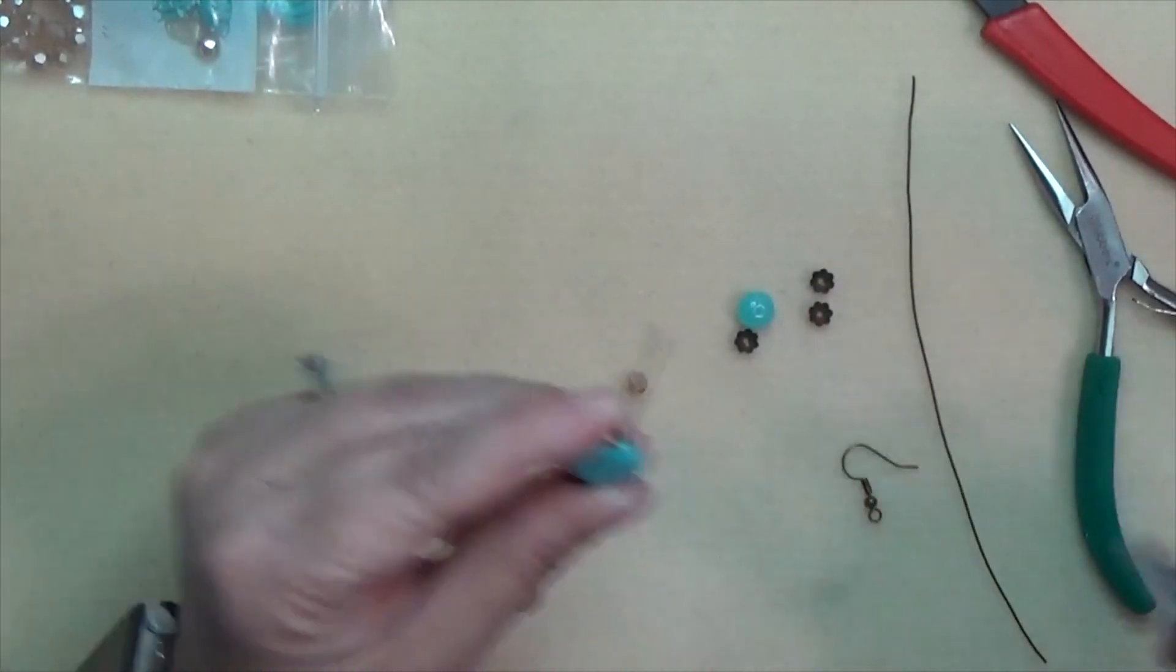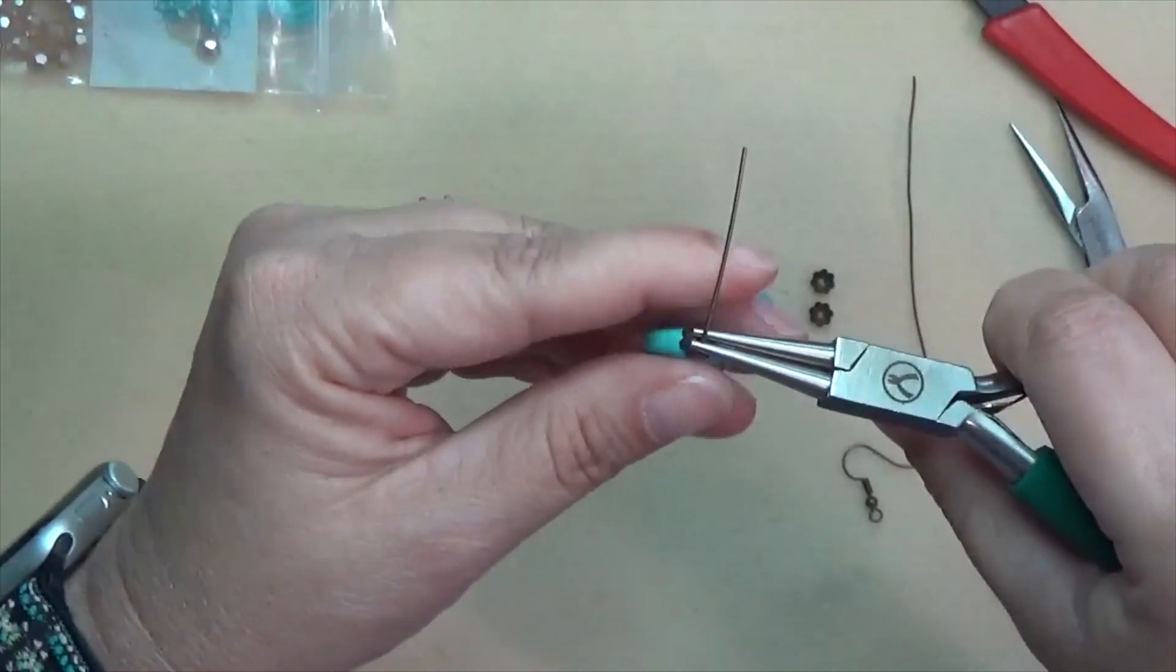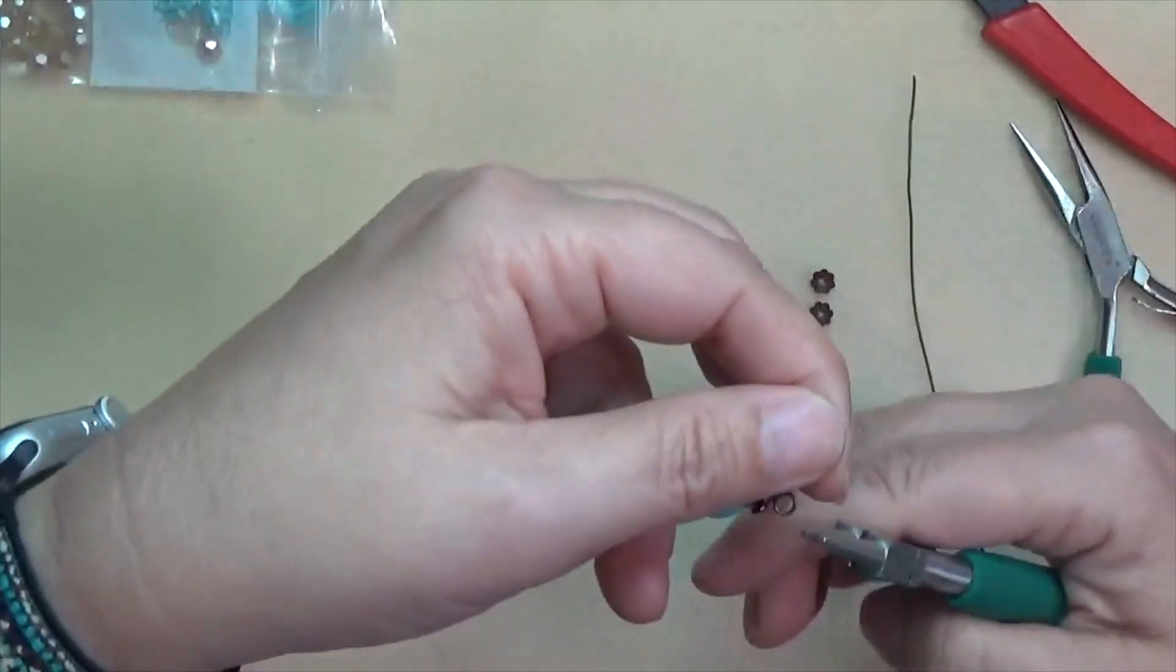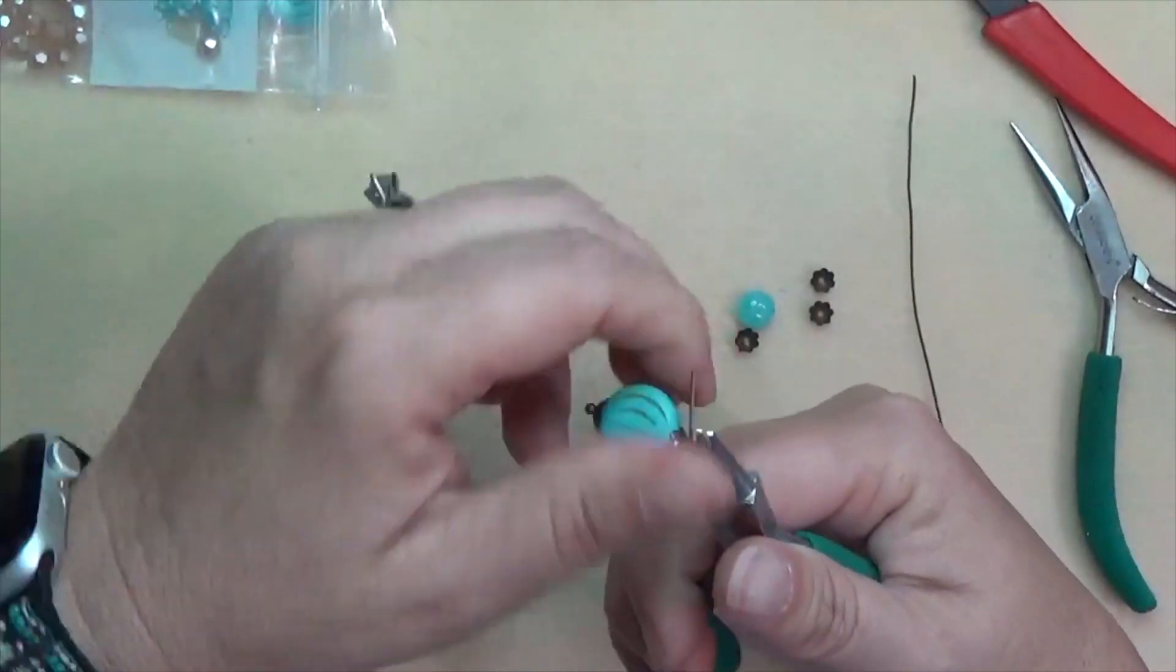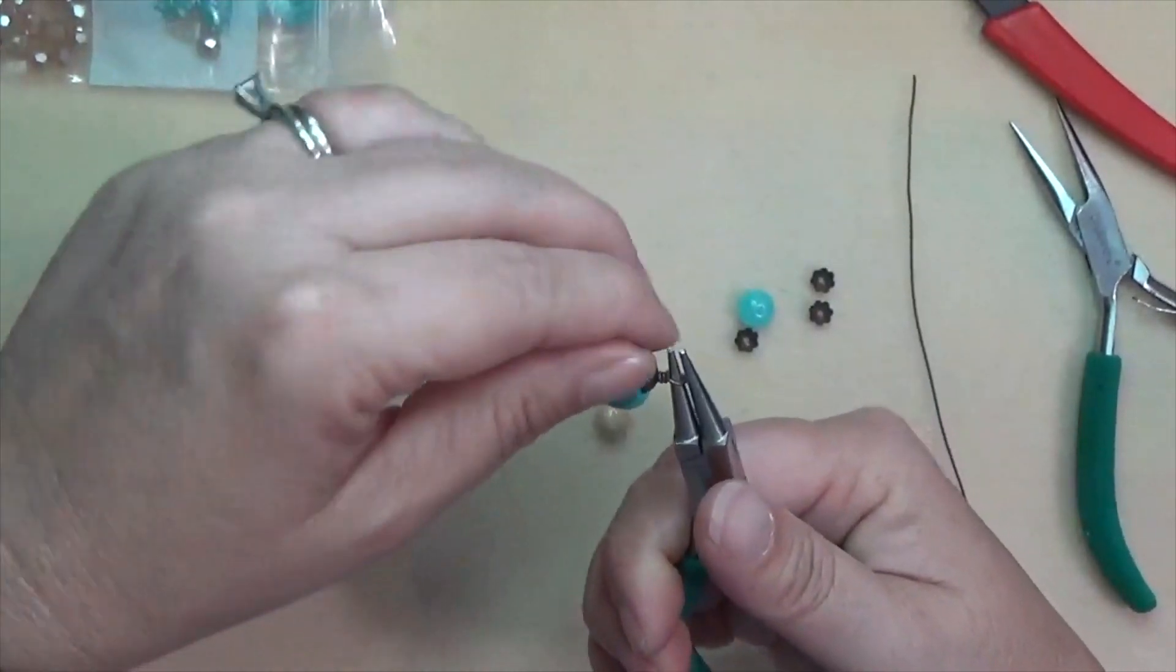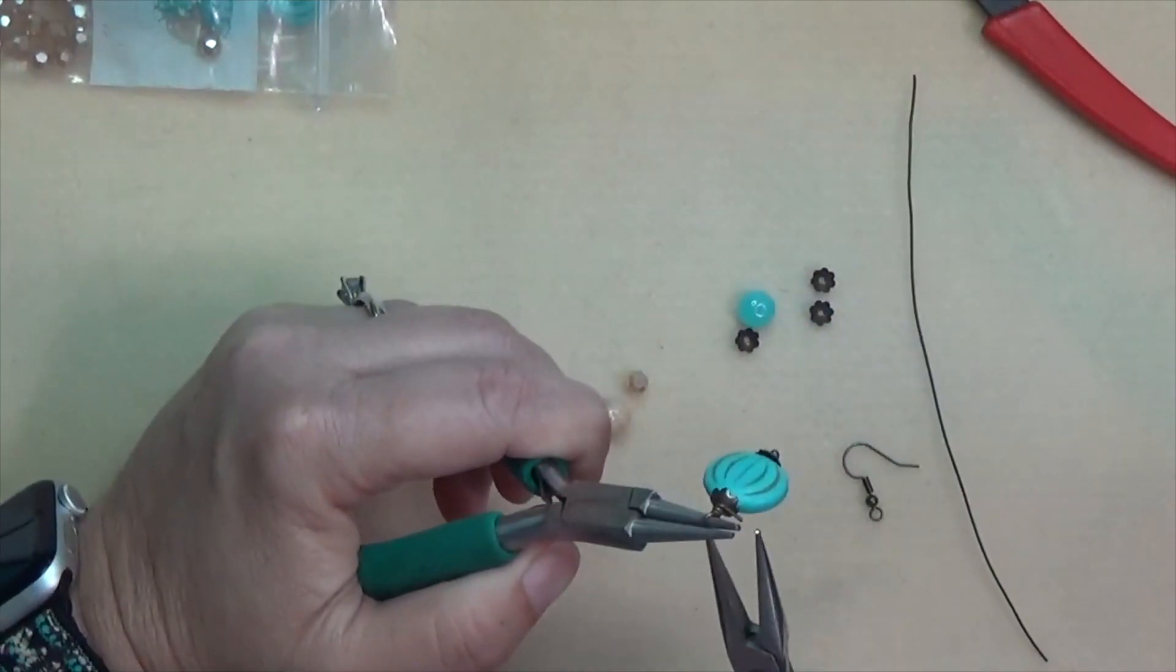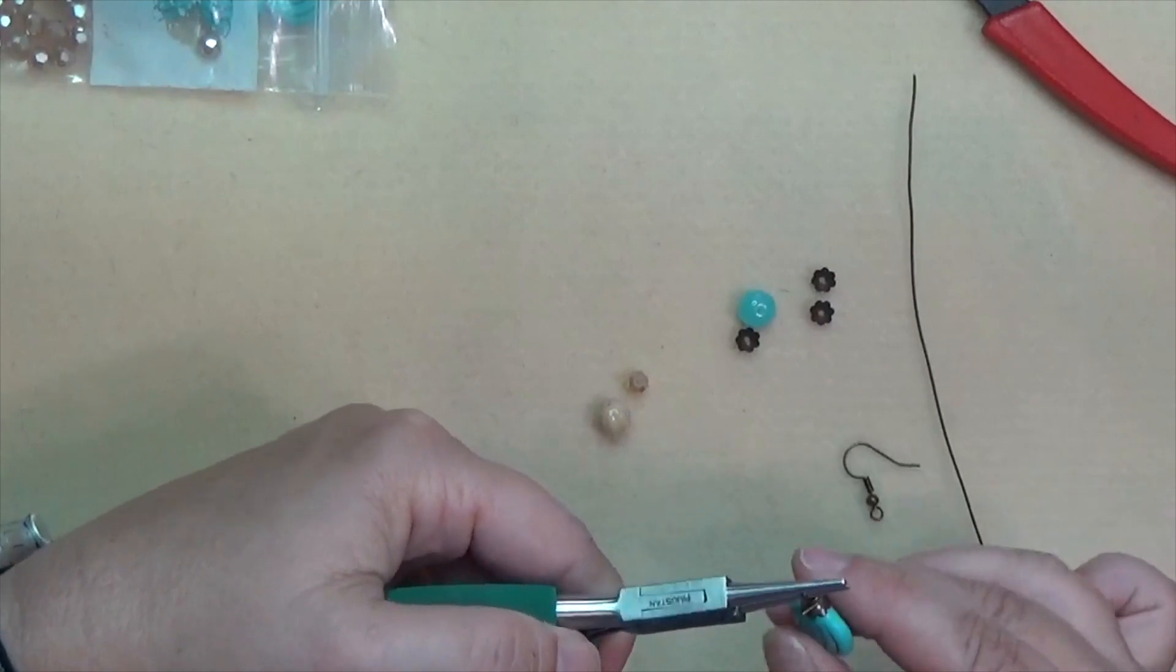The first thing I'm going to do is make a wrapped loop. I'm going to hold my round nose pliers just above that bead cap, bend that wire, then slide my round nose pliers up and make a loop. Once that loop is formed I reposition my pliers and then begin my wrap. If you need more instructions on how to make a wrapped loop, I will have a link up here to my tutorial on how to do that. I am basically going to wrap this tail until it touches this top bead cap.